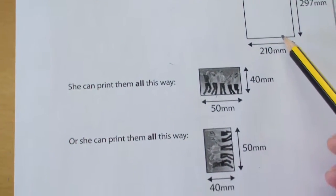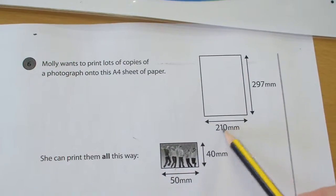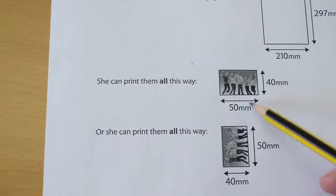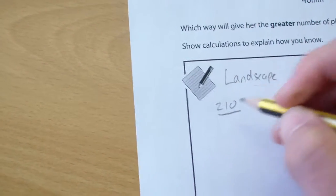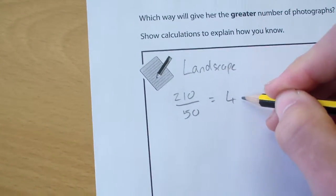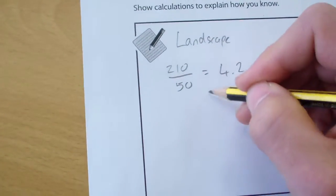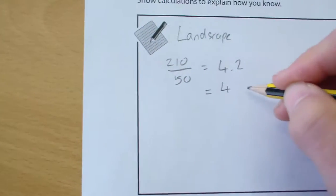So if we're placing it on landscape, we're going to have 210 millimetres divided by the width of our landscape picture, 50, to figure out how many of those will fit across that bottom edge. So we've got 210 divided by 50, which gives me an answer of 4.2. So obviously we can only fit whole pictures on, so that's going to be 4 wide.